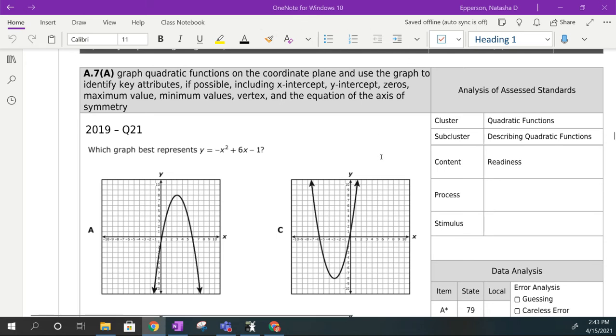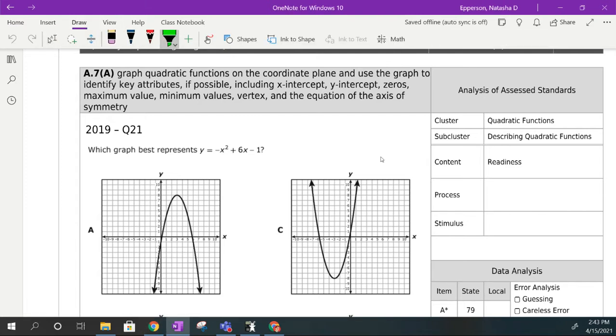I'm going over TEKS 7a. TEKS 7a goes over graphs of quadratic equations on the coordinate plane and use the graph to identify key attributes. Those key attributes are going to be x-intercepts, y-intercepts, zeros, maximum and minimum values that relate to the vertex, and the equation of axis of symmetry.